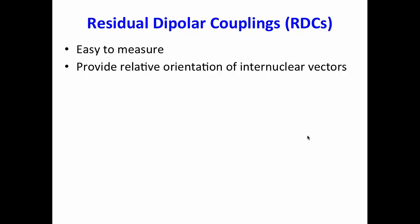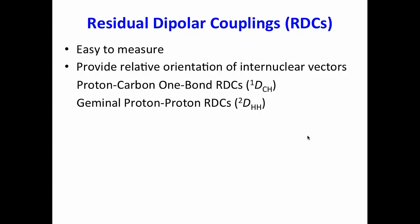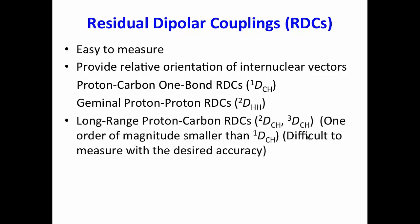The gels will be commercially available soon by MestreLab. The device can be already purchased from Mestre or from Neuler Enterprise. But we can summarize that RDCs are easy to measure. Now we know that they provide the relative orientation of internuclear vectors. These internuclear vectors can be proton-carbon-1 bonds or they can be proton-proton geminal couplings. They can be long-range proton-carbon RDCs. But of course, these are one order of magnitude smaller. They are difficult to measure with high accuracy.